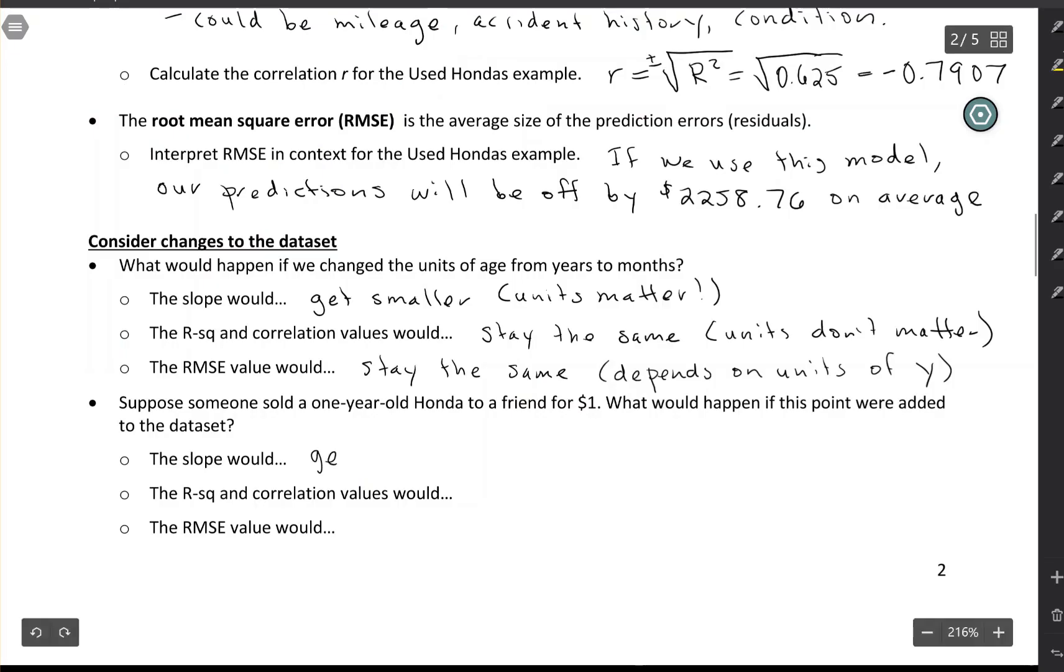So the slope has gotten smaller. The slope would get smaller. And that's because the outlier pulled the regression line towards itself. The R squared and correlation values would get closer to zero. So I'm saying closer to zero instead of smaller because the correlation is negative. So that's a little bit confusing. And the reason that they're closer to zero is because your predictions are less accurate than before.